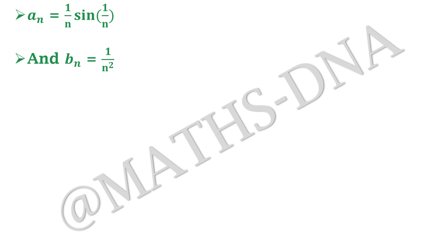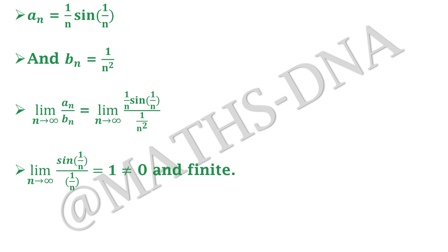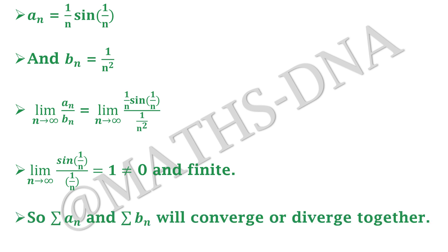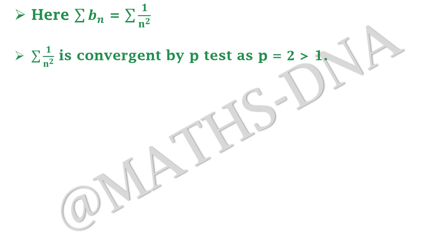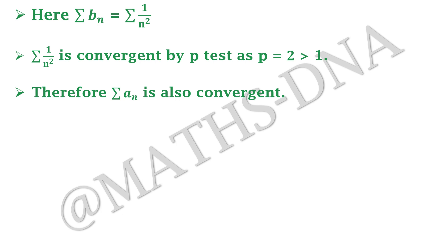We take aₙ = (1/n)·sin(1/n) and bₙ = 1/n². Applying limit n→∞ of aₙ/bₙ gives limit of (1/n·sin(1/n))/(1/n²) = limit of n·sin(1/n) = 1, which is finite and nonzero. Therefore summation aₙ and bₙ converge or diverge together. Since summation bₙ = Σ 1/n² is convergent by p-test (p=2>1), our aₙ is also convergent, and hence option (c) is correct.